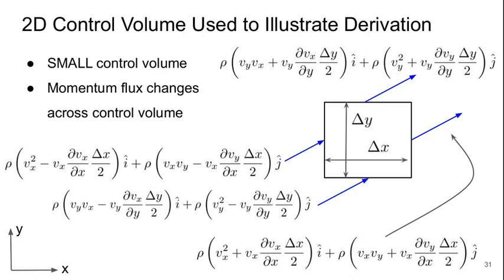First, let's look at the momentum changes across the control volume. So flow could be going in any direction. But on the left side, we have this term. This is what we end up with. It's basically we have the density times velocity squared minus the velocity times the gradient of the velocity times sort of half the distance from the middle of the control volume to the edge. This is essentially kind of a Taylor series expansion approach, right? And then we've got a second component associated with the y velocity and similar terms for all of the sides of the control volume.